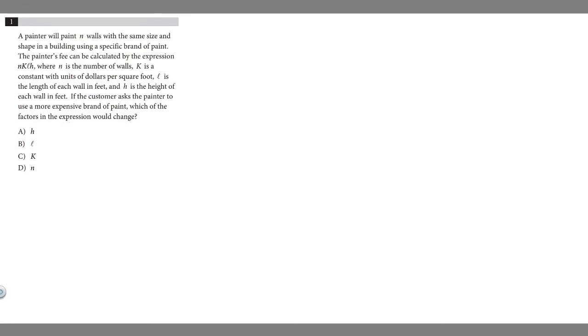Here we're given this word problem, and whenever I do a word problem like this I always like to write out what we're given when we read it. So let's go ahead and read this. We're told that a painter will paint n walls with the same size and shape in a building using a specific brand of paint.